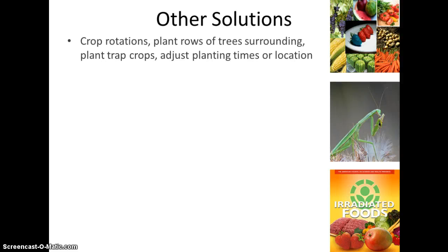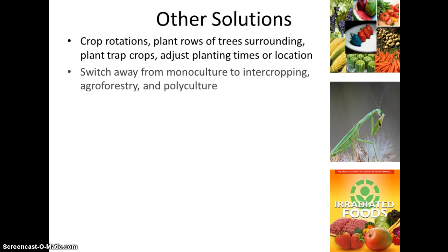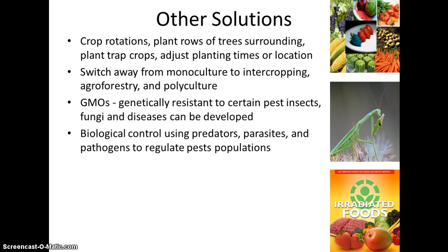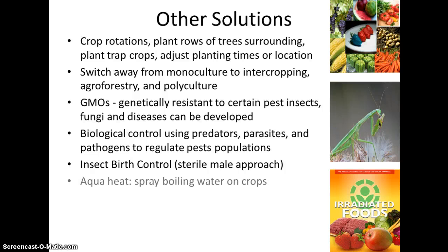Other solutions beyond using pesticides include rotating crops, planting rows of trees, using trap crops like Venus flytraps, and adjusting planting times so they don't align with pest cycles. Monoculture — planting one crop — is risky because a pest can wipe out the entire crop. Intercropping or polyculture can reduce that damage. Genetically modified organisms resistant to certain pests or diseases can also be developed. Biological control uses natural predators to regulate pest populations. Males of pest species can also be sterilized, usually through irradiation.